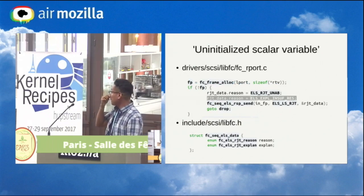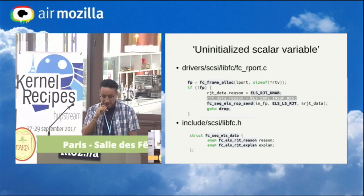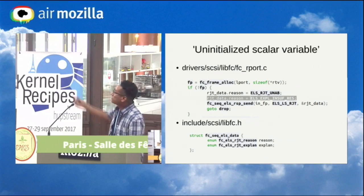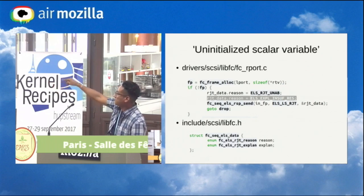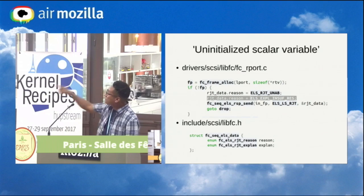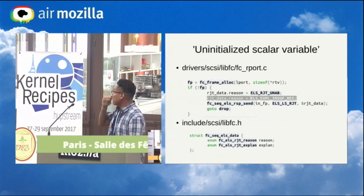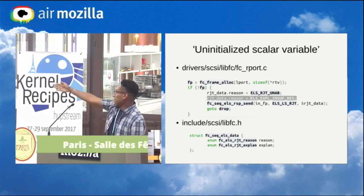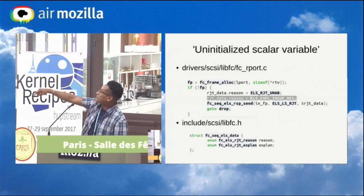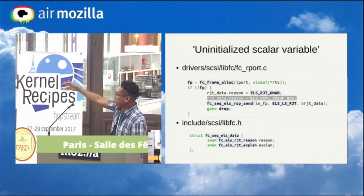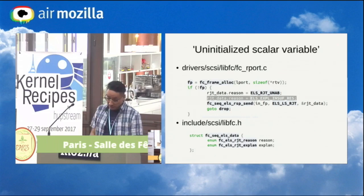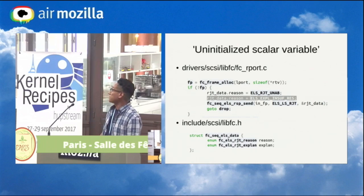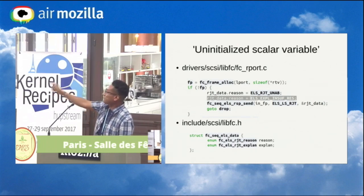The next example: the report here was that there was a variable inside a function being used without previous initialization. Something you can notice immediately is that the 'reason' field of the RJT data structure has a value assigned to it twice. What I did was take a look into the function definition and the structure definition. I found this structure only has two fields: reason and expand.